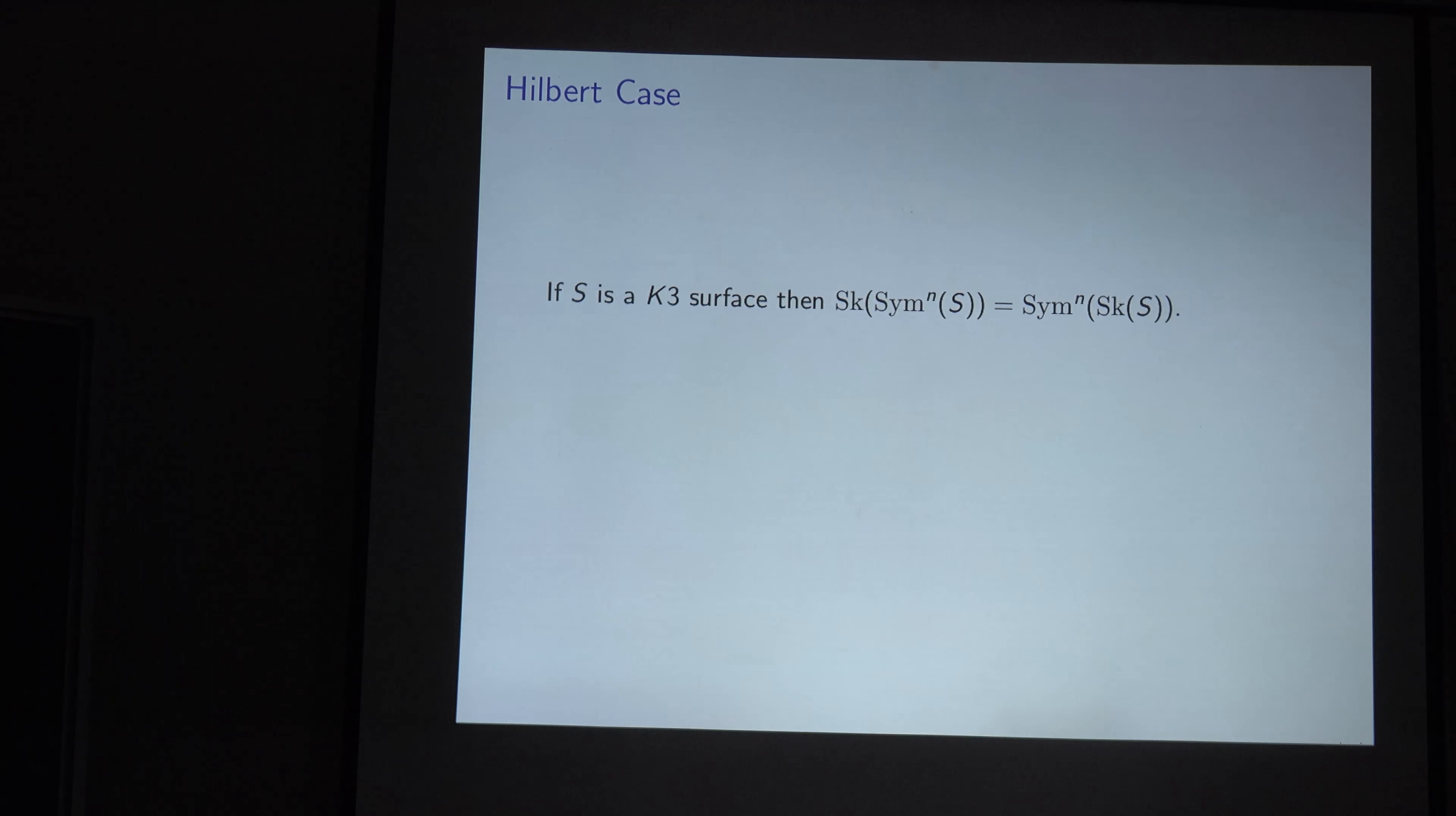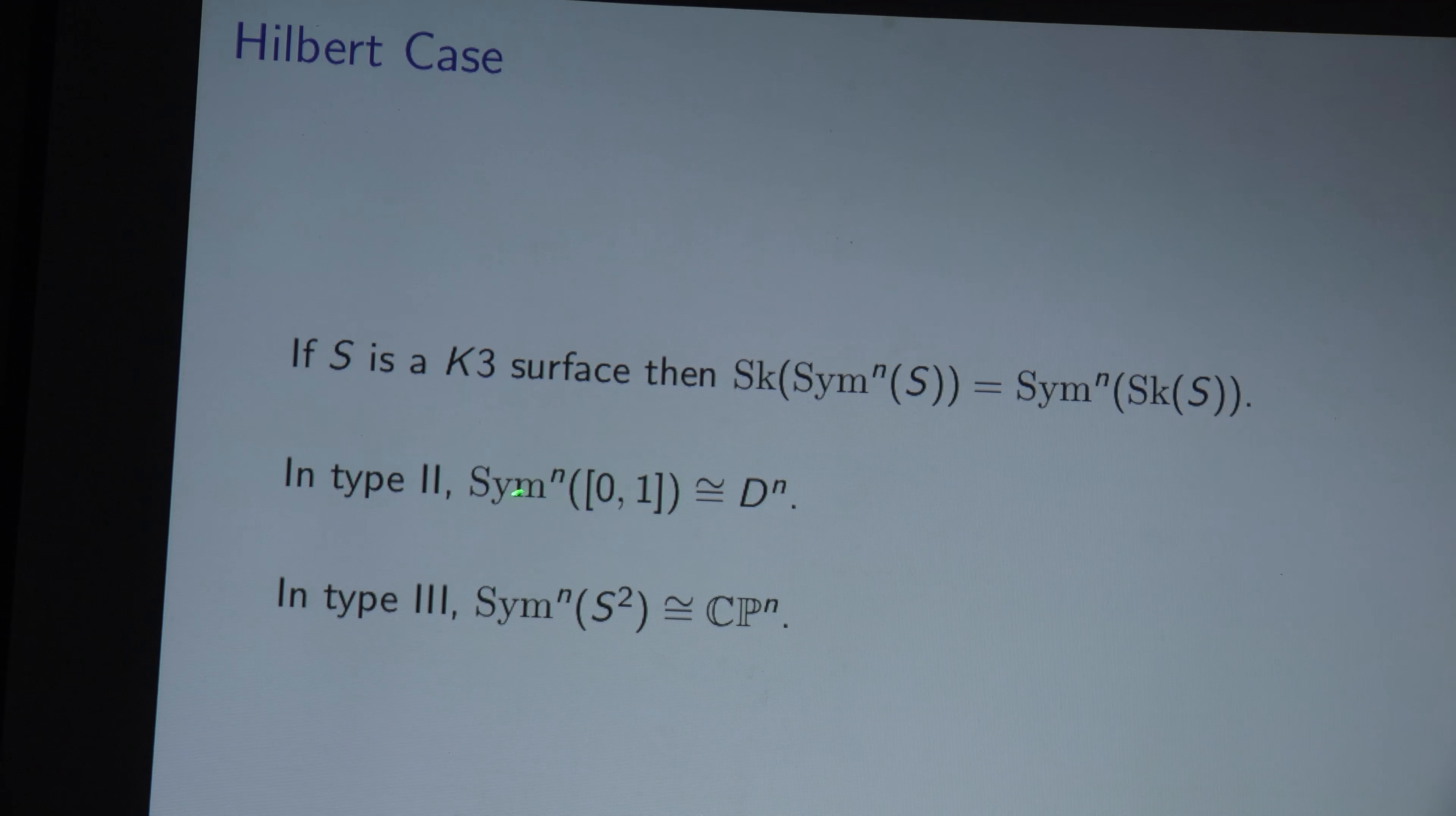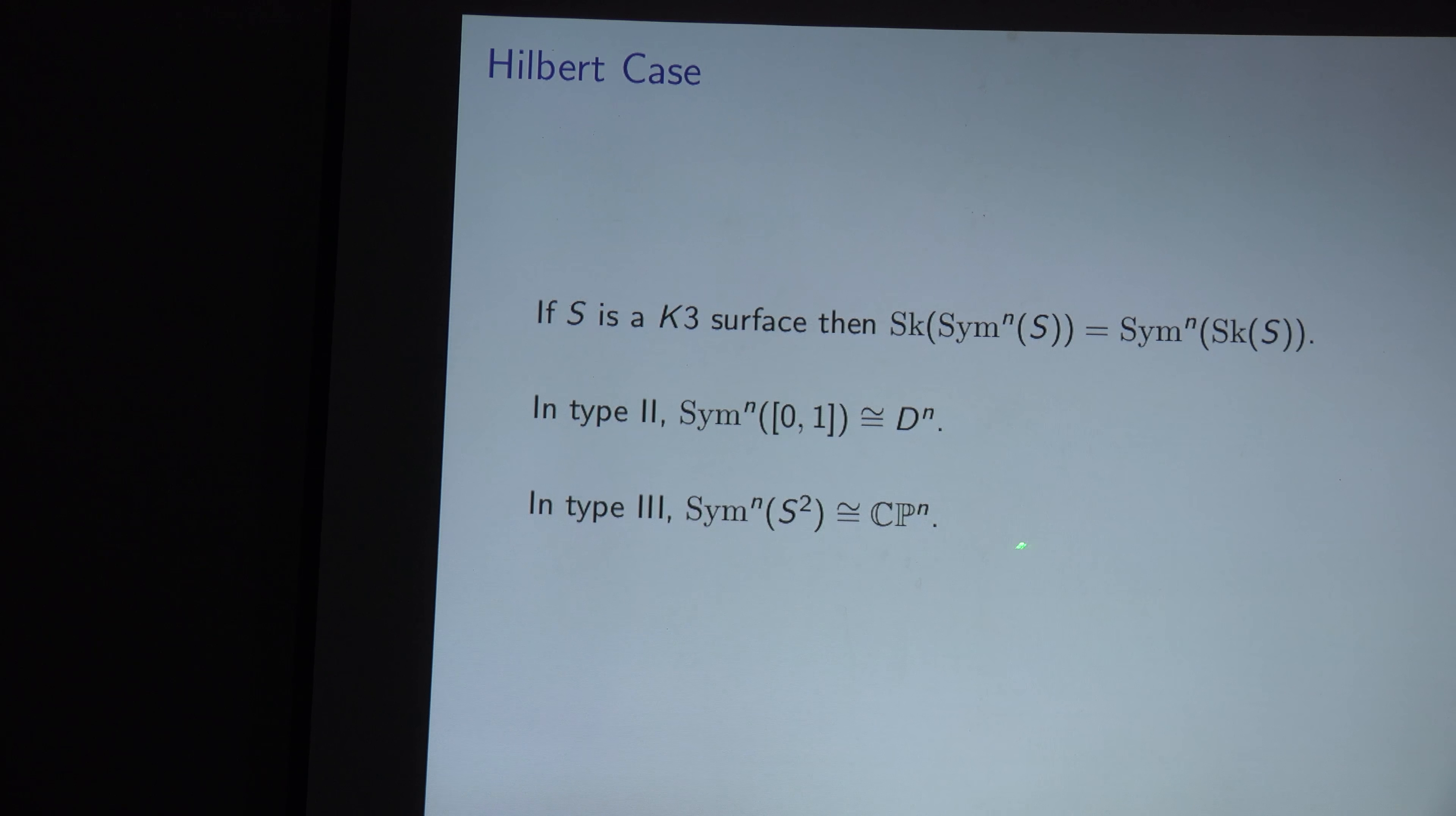Okay. So let's see what we got. So in the Hilbert case, then if we just have the skeleton of the Hilbert scheme, or also the skeleton of the symmetric nth power is the symmetric nth power of the skeleton. So in type two, you take the skeleton of an interval and you get, well, a simplex, but we're only doing this up to PL. So we're just saying n-disc. And in type three, you're taking the nth symmetric power of S^2. Well, you know, algebraically that could be the nth symmetric power of P^1 gives you CP^n. We get CP^n.